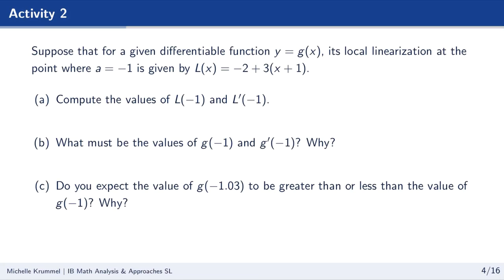Suppose that for a given differentiable function y equals g of x, the local linearization at the point where a is negative 1 is given by l of x equals negative 2 plus 3 times x plus 1. Let's find the values of l of negative 1 and l prime of negative 1. For l of negative 1, we substitute negative 1 into l of x: negative 2 plus 3 times negative 1 plus 1 equals negative 2.